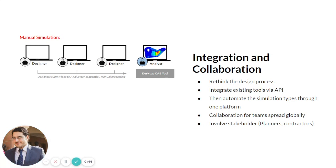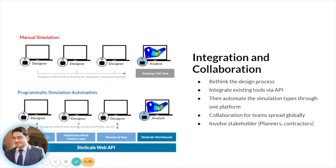My final point is integration and collaboration. The typical design workflow is very sequential — you have one analyst or simulation person, with different people sending requests to do analysis on a desktop CAD tool. What we need to do is turn that around completely and give a lot more people access to different apps — for example, a wind comfort app or a wind loading app — so architects and engineers can all access this, dip in and out whenever they want. This is automated using an API and hosted on SimScale Workbench, involving all the different stakeholders.